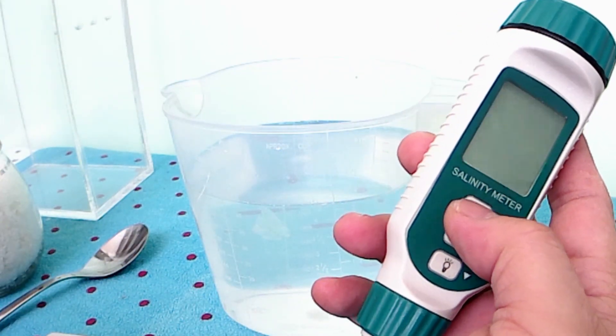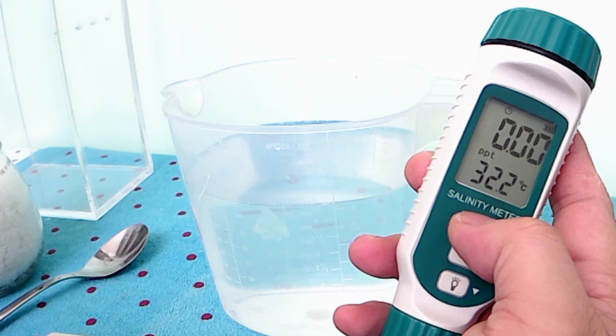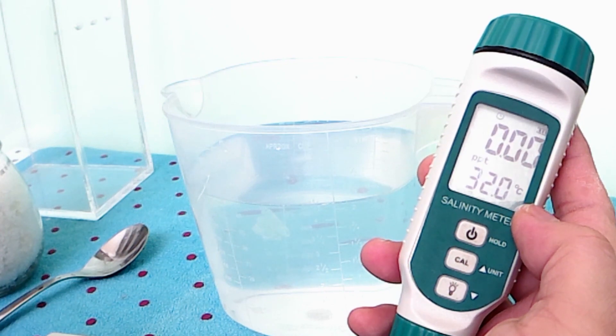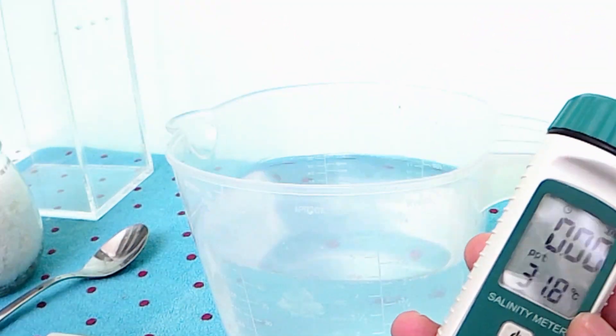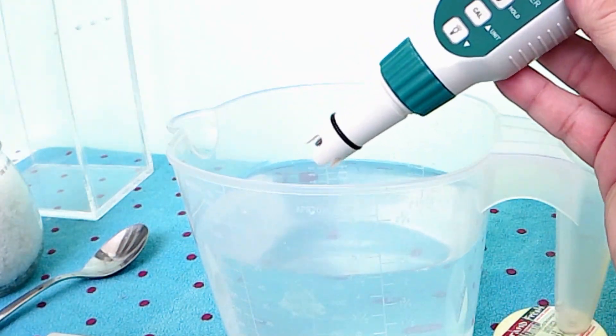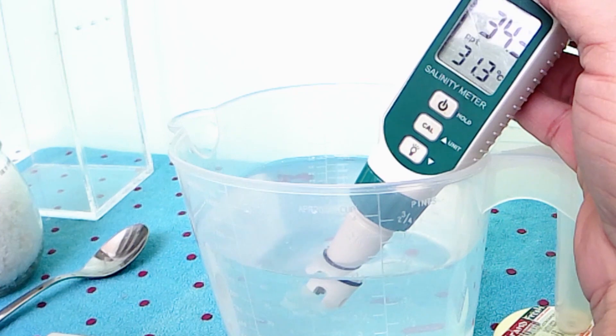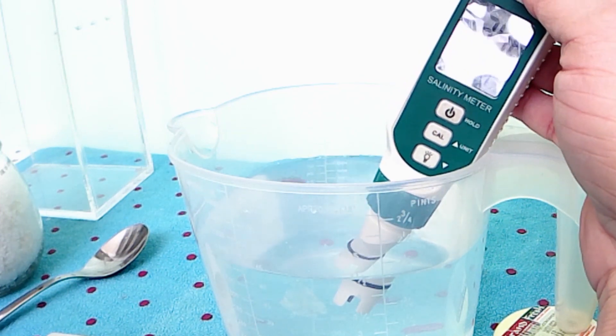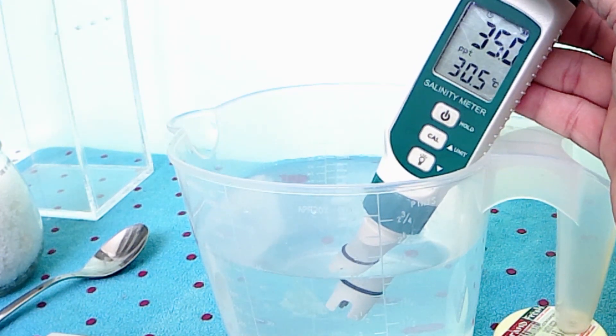Now we will check the salinity. The above number is salinity and the bottom number is temperature. I hope you can see it on your screen. Just wait a little bit until the number stops, and that's the final reading.